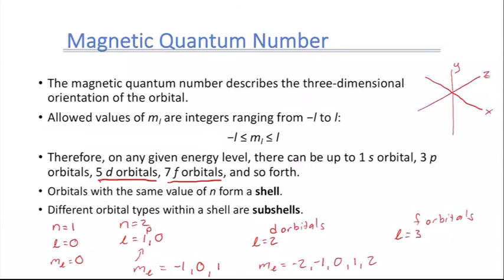A bit of terminology: orbitals with the same value of N are called a shell. So the s and p orbitals in the N=2 level are in the same shell. Different types of orbitals are called subshells — so p is one subshell, s is another, and d is a third. Together, the three quantum numbers tell us the energy level (shell), the shape (subshell), and the orientation along the X, Y, and Z axes.